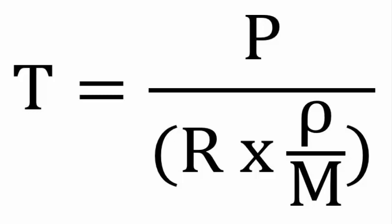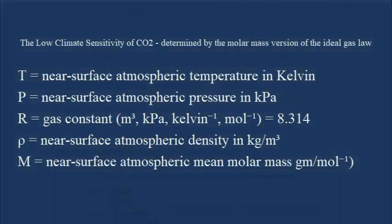The molar mass version of the ideal gas law tells us that the climate sensitivity of CO2 is minus 0.02 degrees Celsius, very close to that figure. How do we arrive at that?